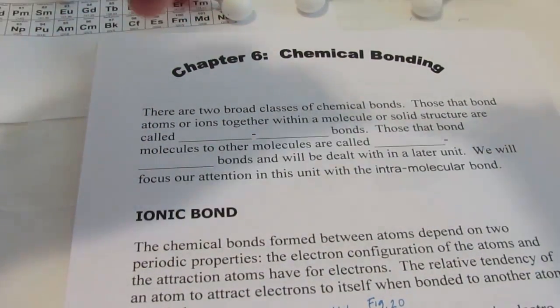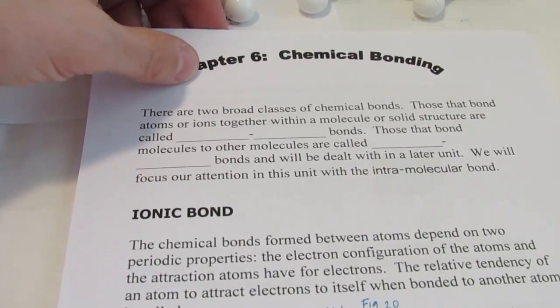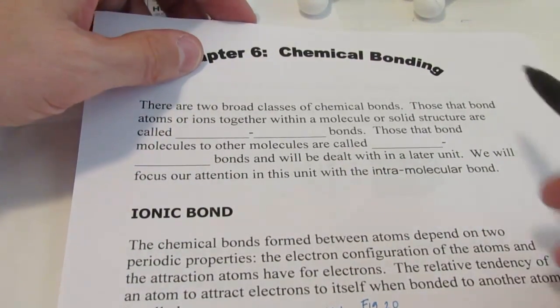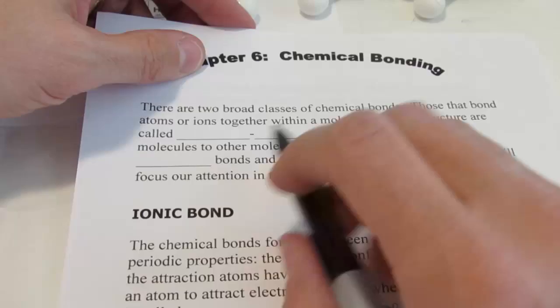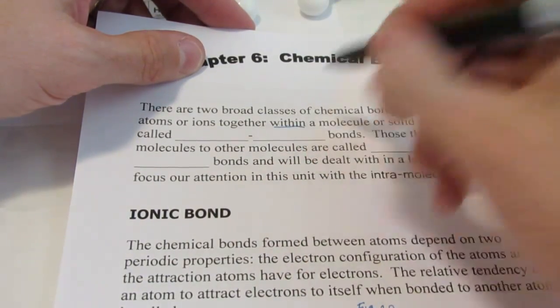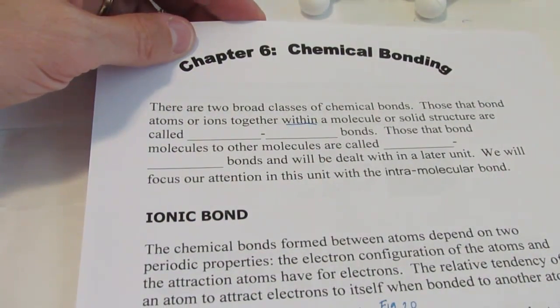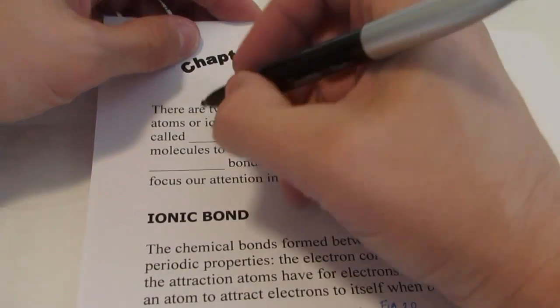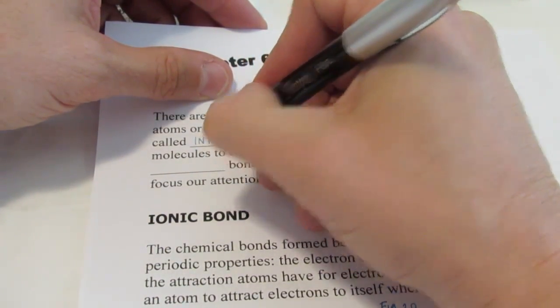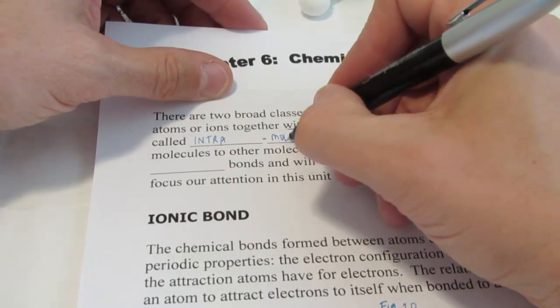For chemical bonding you need to remember that there are two broad classes of chemical bonds. Those that bond atoms or ions together within a molecule or solid structure are called intramolecular bonds.